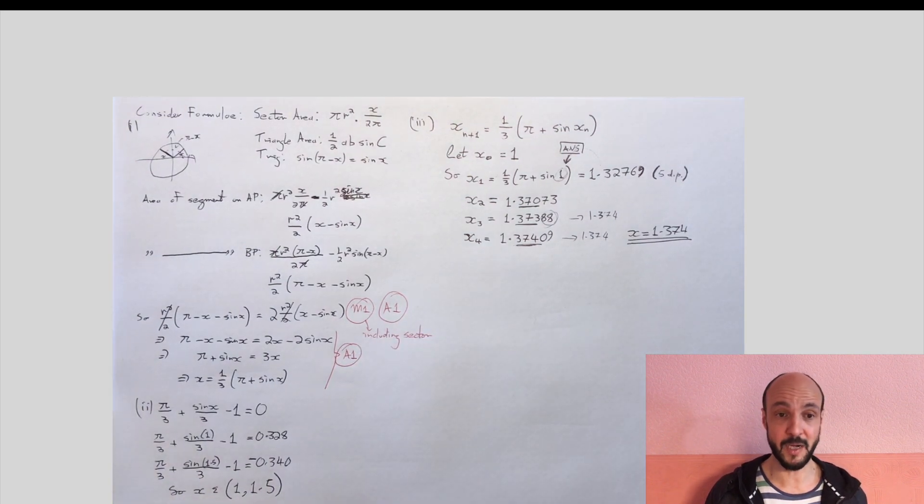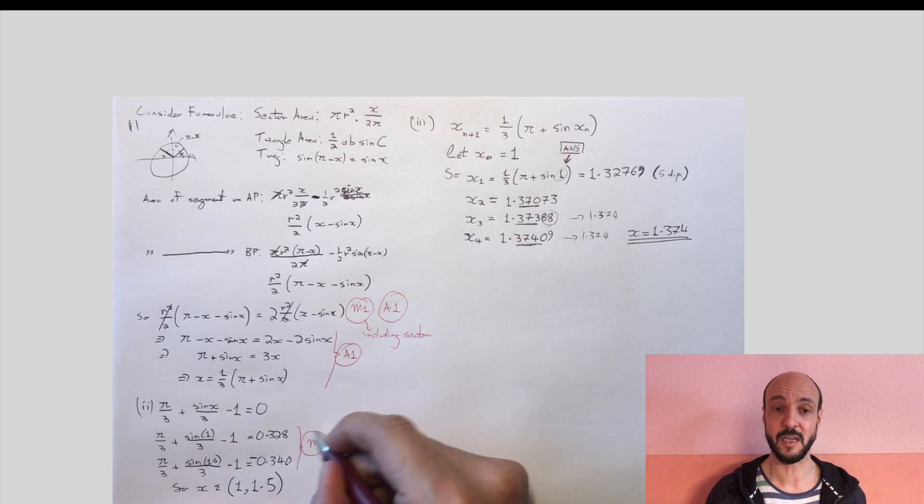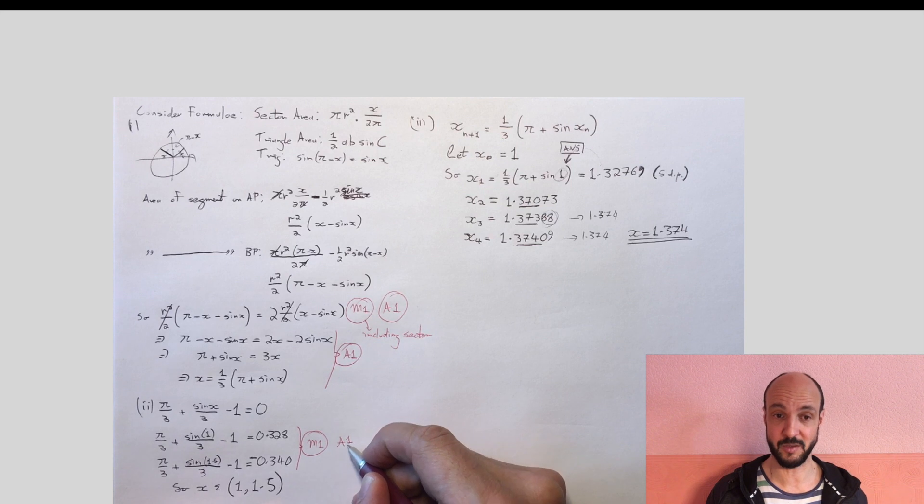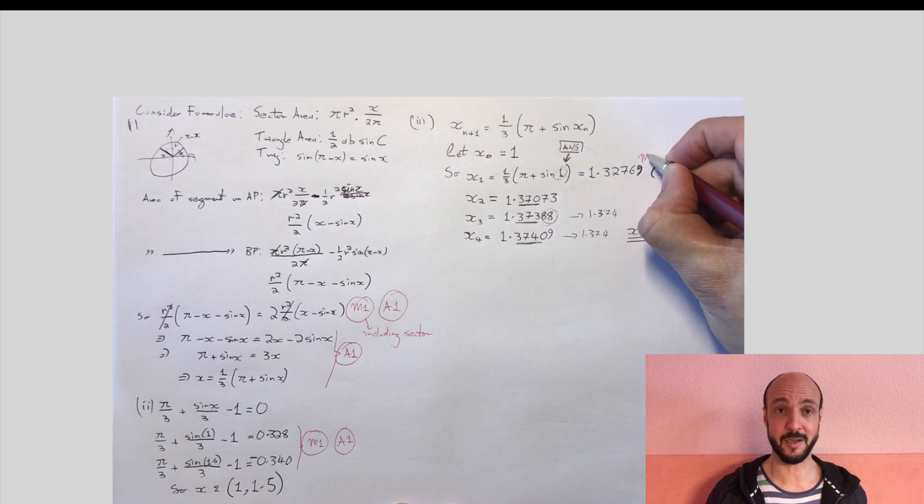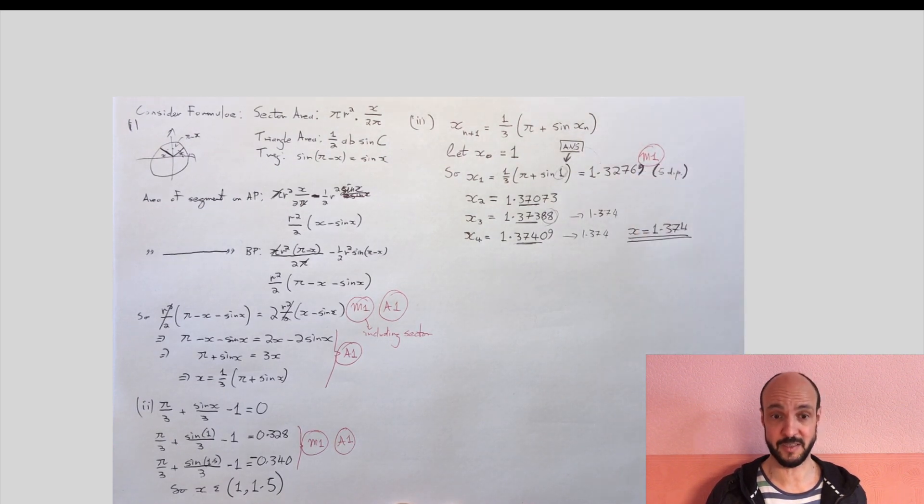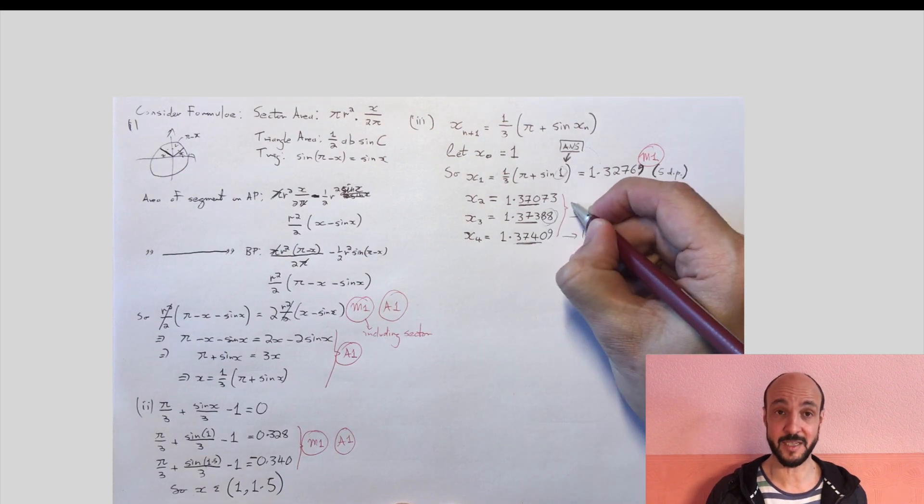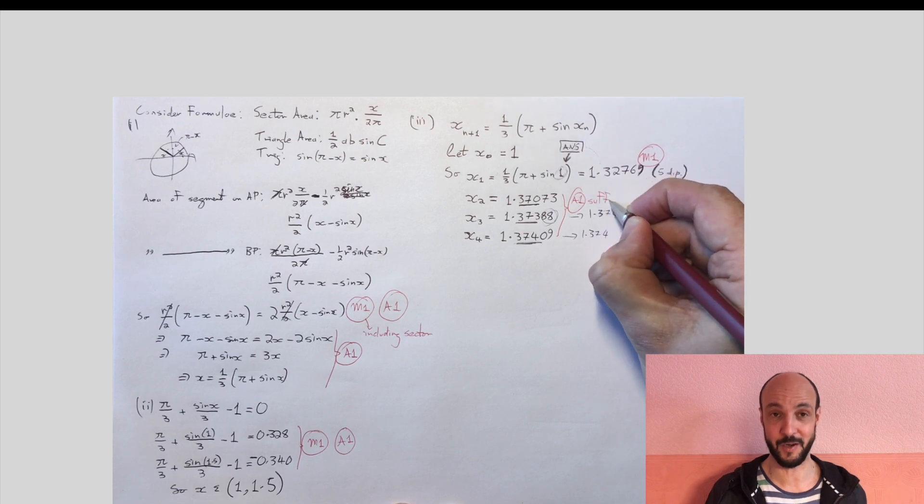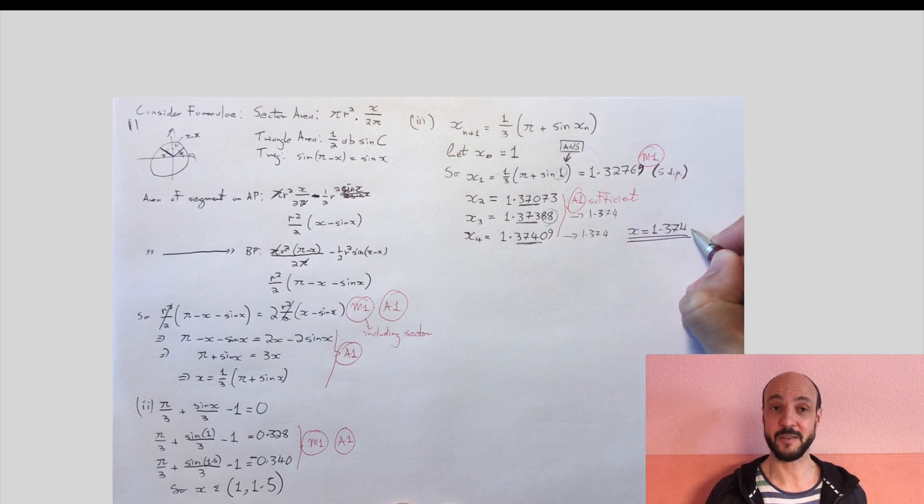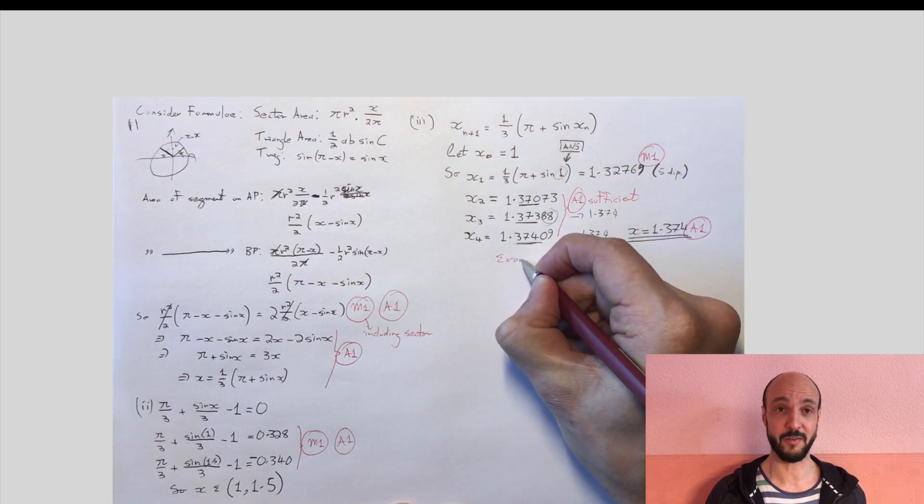In the second part, there were two marks, one for the method mark of substituting the values into the equation, and an accuracy mark if you substituted them and got the correct values below and above zero. And in the third part, we got one method mark as long as we did at least one iterative step correctly. We got an accuracy mark if we did sufficient iterative steps to justify the answer. So in this case, we had to go as far as 1.37409. And then we got a further accuracy mark for correctly stating the answer as 1.374.